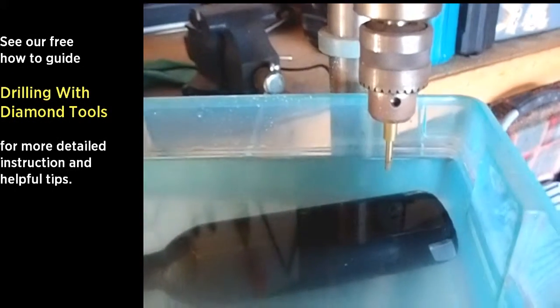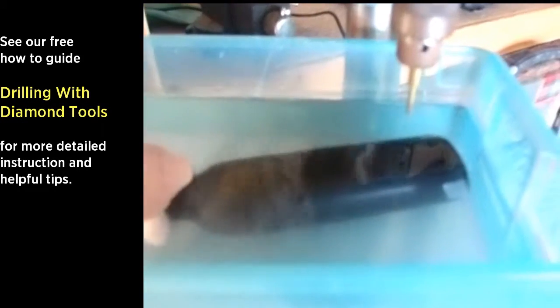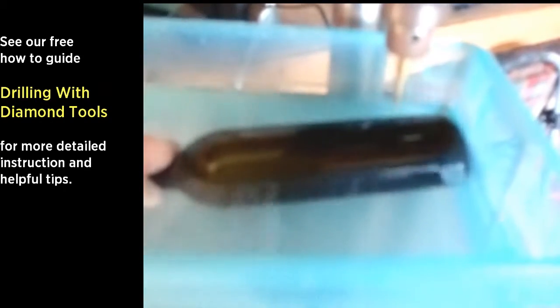We've installed the core bit into our drill press. We've taken a plastic container and filled it with water so that it's deep enough to submerge our bottle and cover it with about a quarter inch.